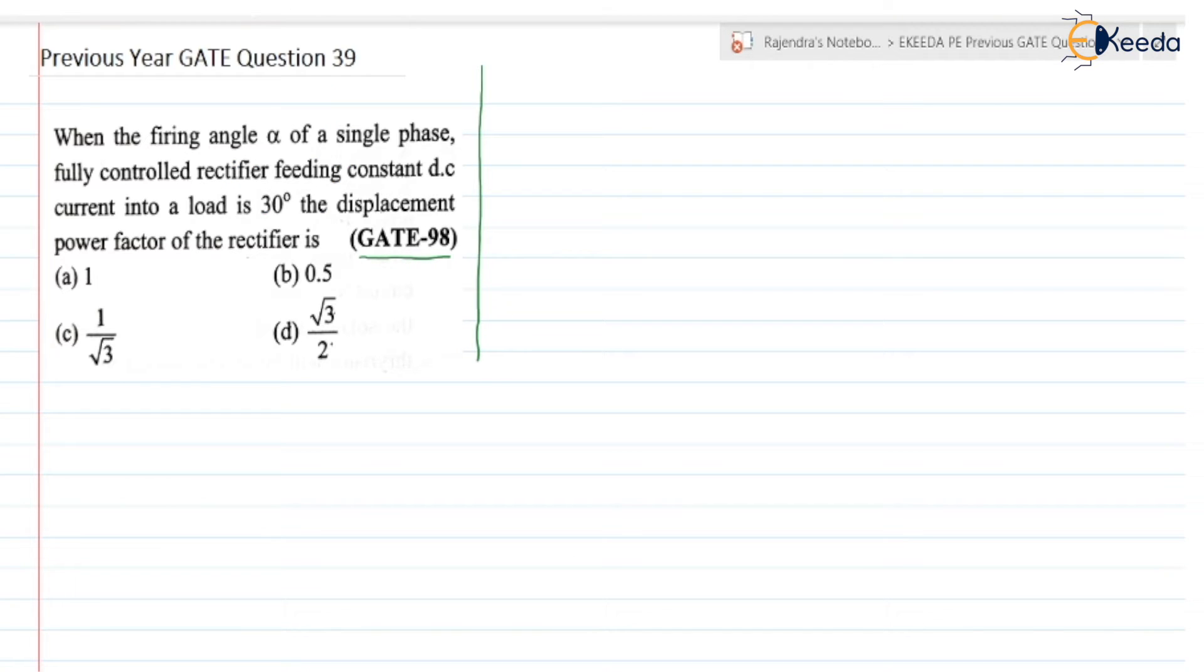When the firing angle alpha of a single phase fully controlled rectifier feeding constant DC current into a load is 30 degrees. Constant DC current load means the load is either R-L load or R-L-E load.